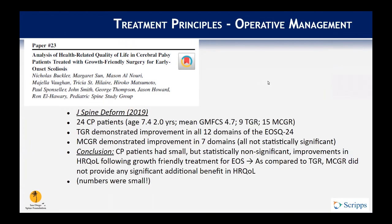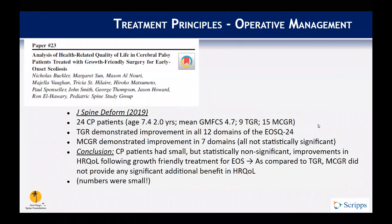A paper from Spine Deformity examined health-related quality of life outcomes in CP patients treated with growth-friendly devices, looking at traditional growing rods versus magnetically controlled growing rods. Traditional growing rods showed improvement in all 12 domains of the EOSQ questionnaire, while MCGR showed improvement in 7 domains, though neither was statistically significant. The conclusion was that CP patients had small but statistically non-significant improvements in health-related quality of life following growth-friendly treatments, and MCGR did not provide significant additional benefit over traditional growing rods.